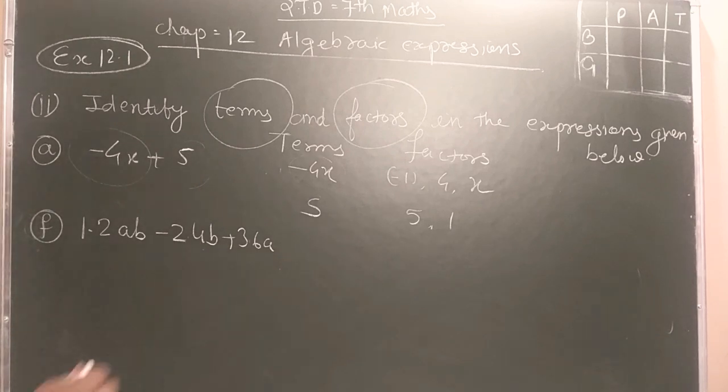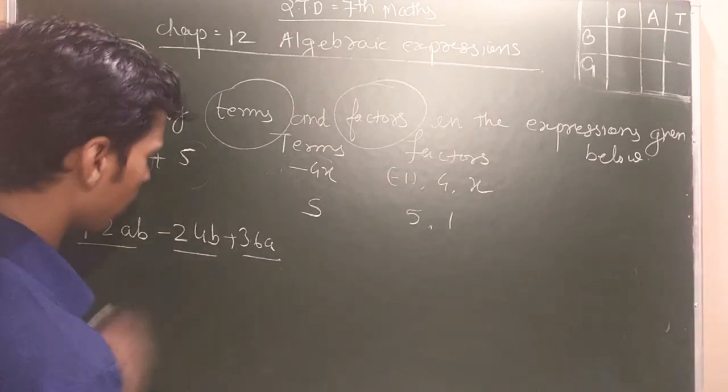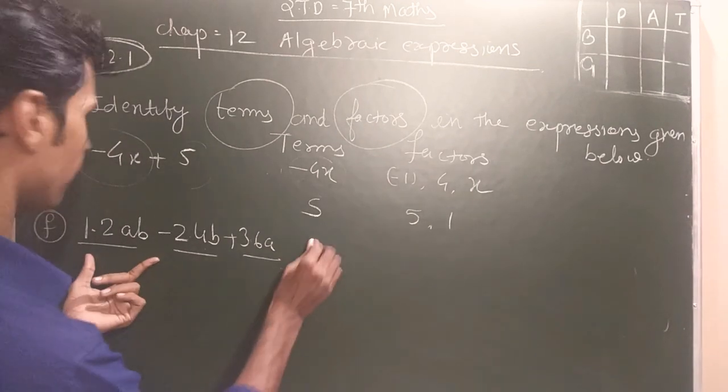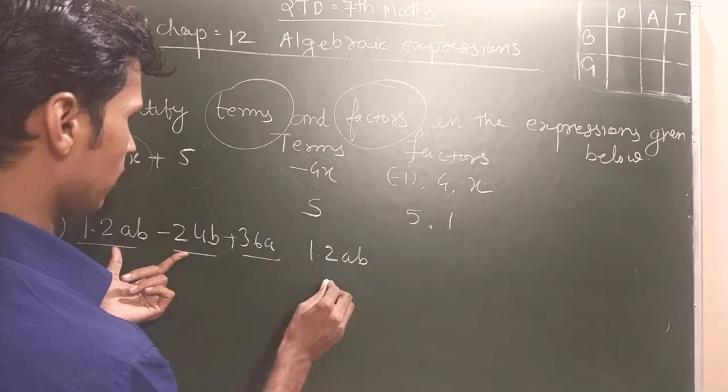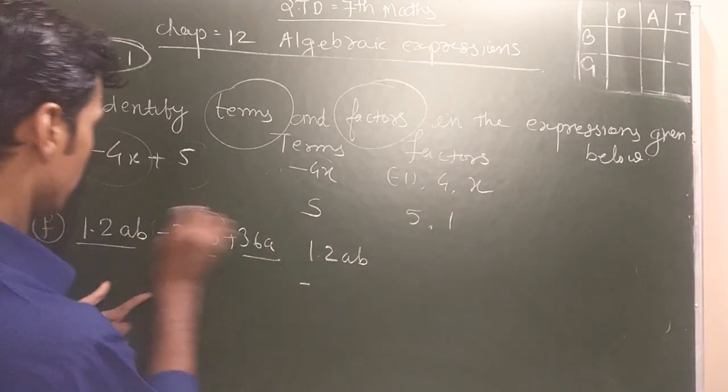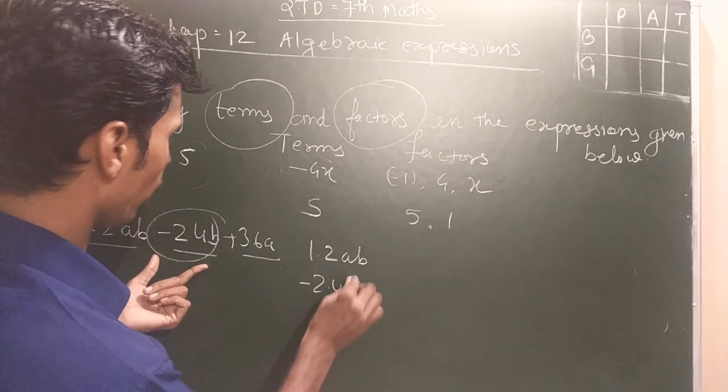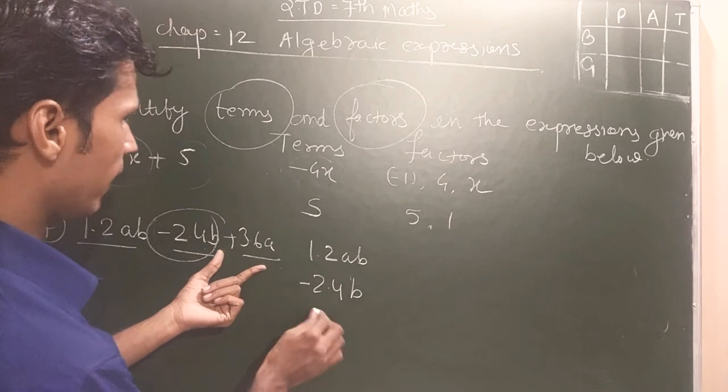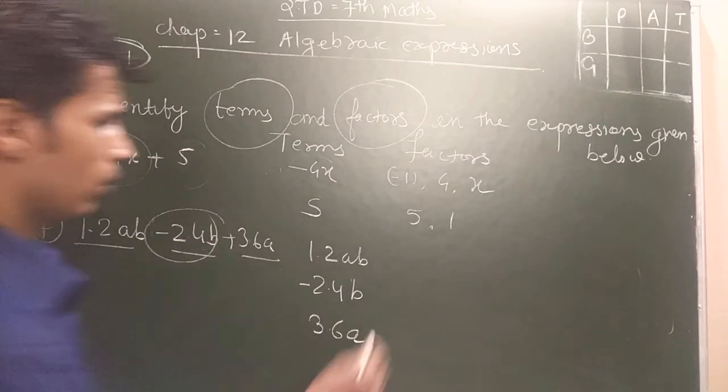Now student, here is three terms: first, second, third. So I will write here, 1.2ab minus, aapko saathme and x student. Second term: minus 2.4b and third: 3.6a.